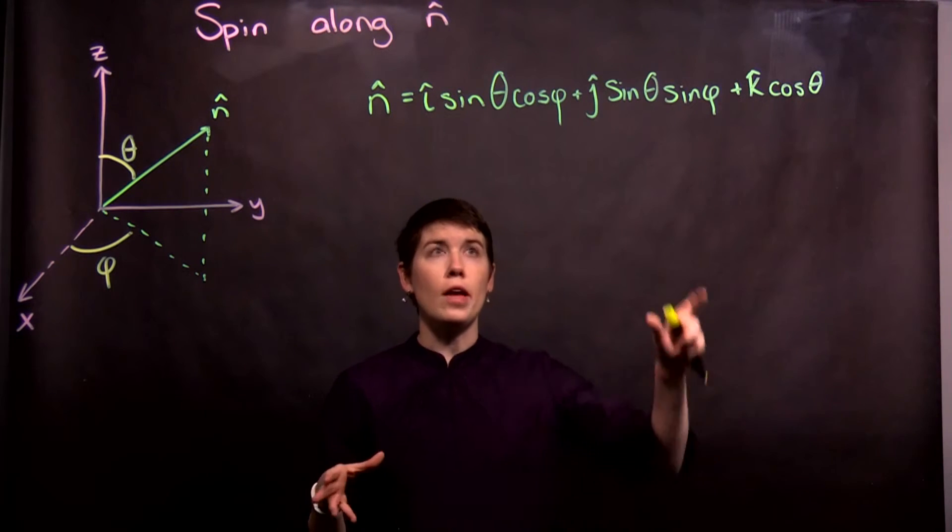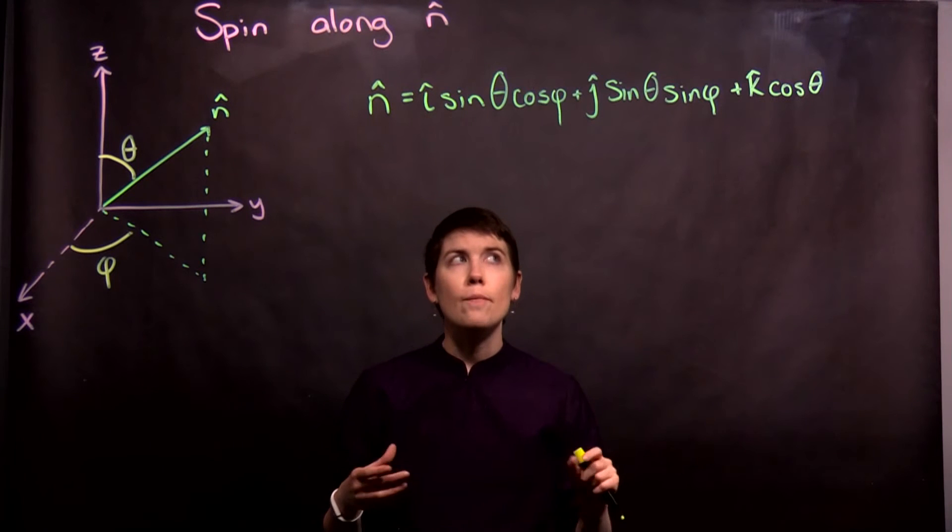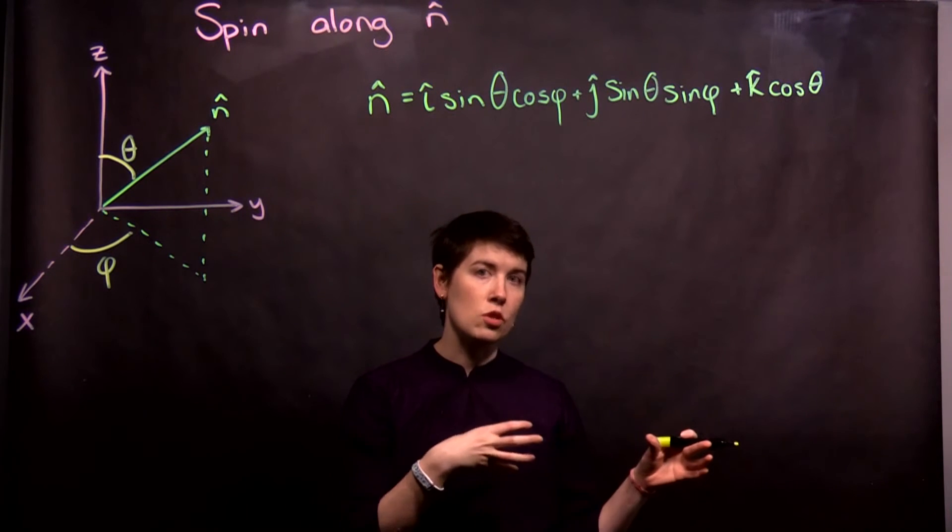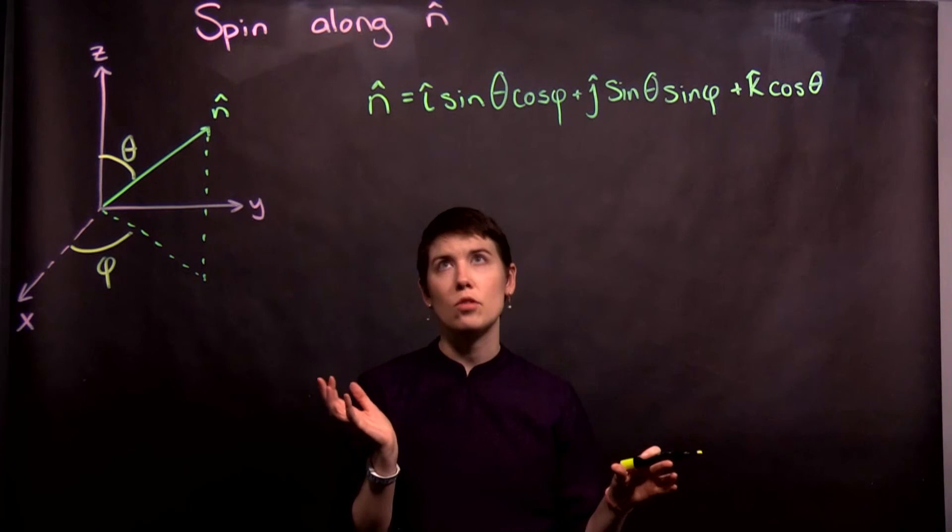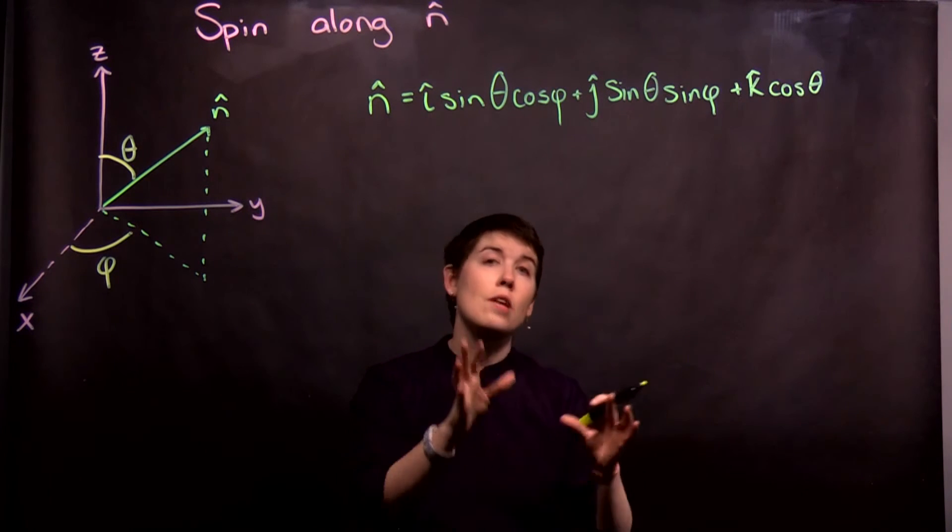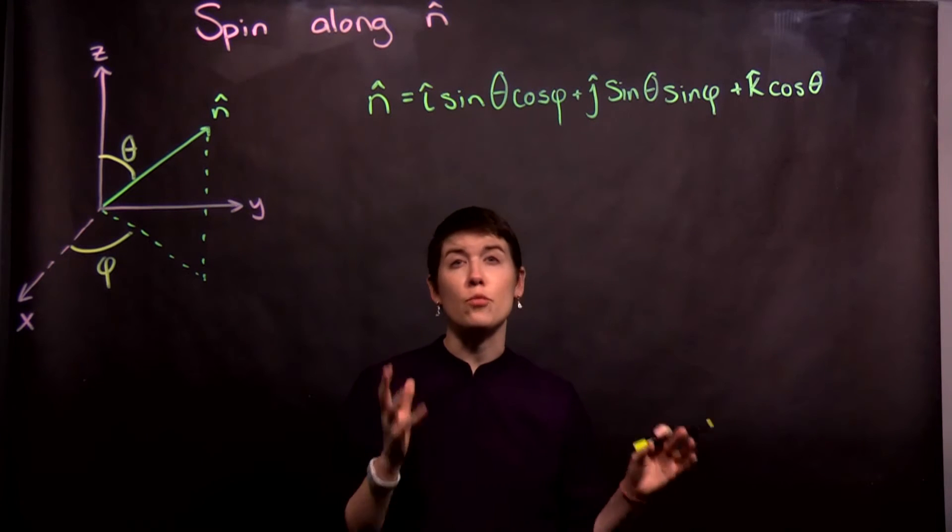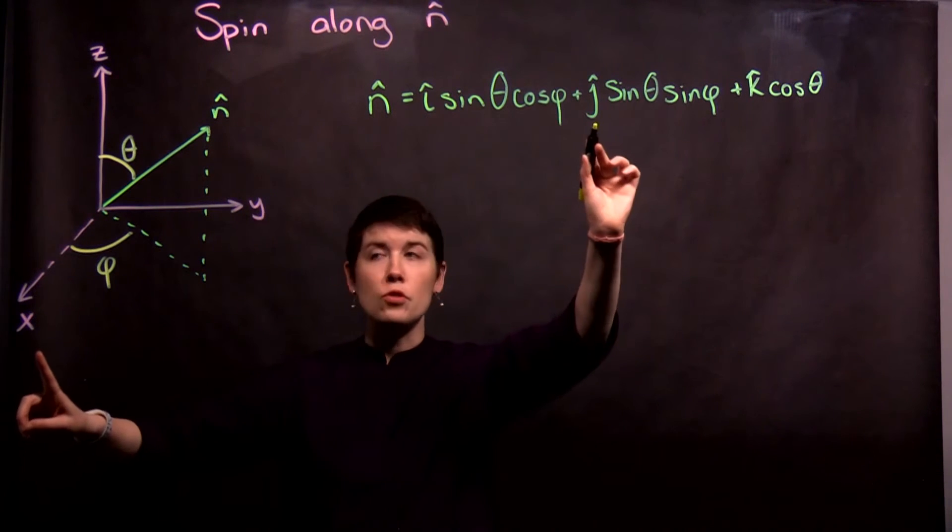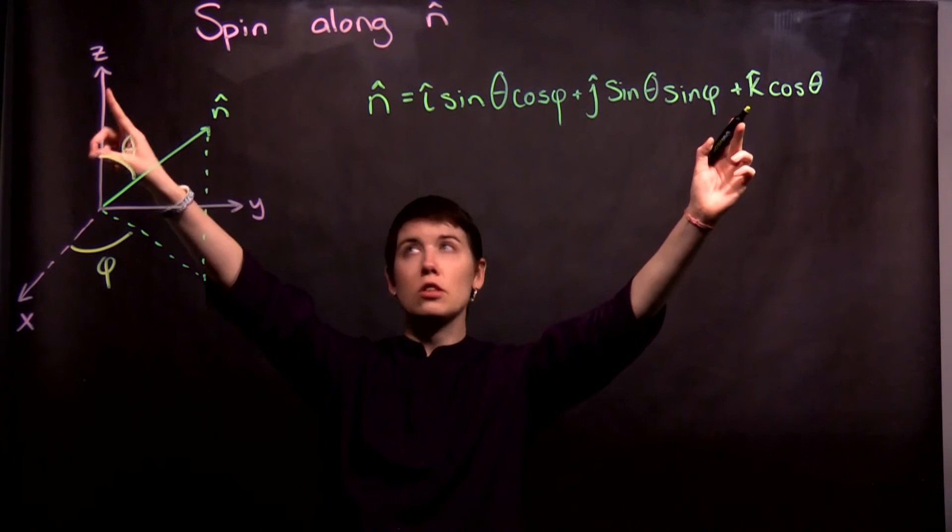So when we do this out, and I've already written this out, this should look like converting from Cartesian to spherical, except the fact that there's, or vice versa, except for the fact that there's overall not a radius term. So this is just the unit vector in the x direction, unit vector in the y direction, unit vector in z.